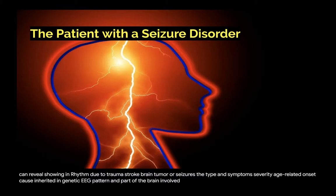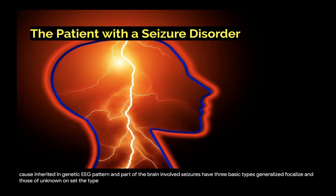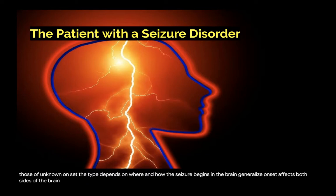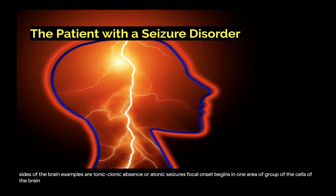Seizures have three basic types: generalized, focal, and those of unknown onset. The type depends on where and how the seizure begins in the brain. Generalized onset affects both sides of the brain; examples are tonic-clonic, absence, or atonic seizures. Focal onset begins in one area or group of cells of the brain; examples are focal onset aware and focal onset impaired awareness.